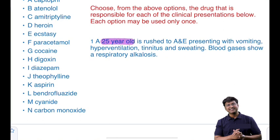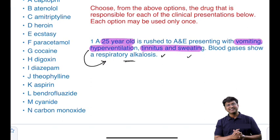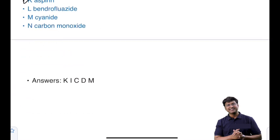The first clinical scenario: a 25-year-old individual rushes to accident and emergency presenting with vomiting, hyperventilation, tinnitus, and sweating. The blood gas shows the presence of respiratory alkalosis. This is very classically seen in aspirin poisoning. In aspirin overdose, the patient presents with hyperventilation causing respiratory alkalosis, and later there can be development of metabolic acidosis as well.